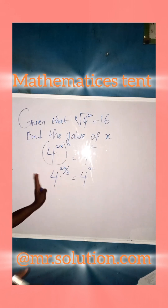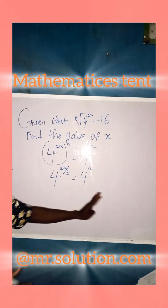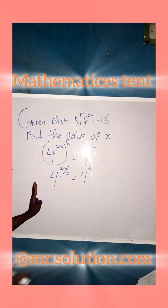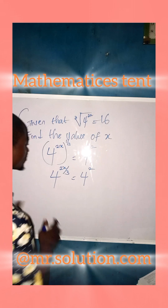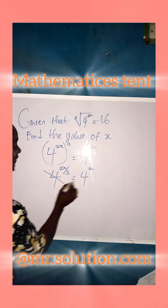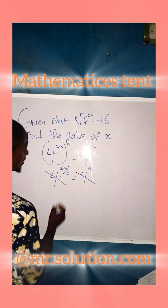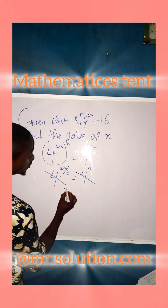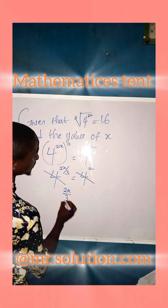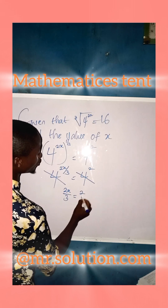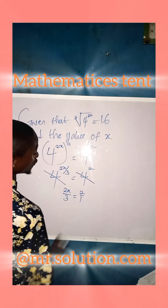In this aspect, since we have the same base, we equate the powers and keep the base aside. So we are now left with 2x all over 3 equals 2 over 1.